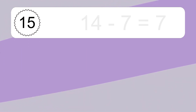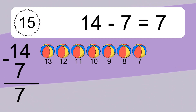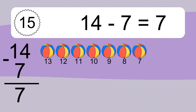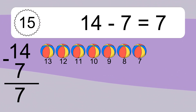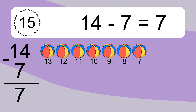14 minus 7 equals what? 14 minus 7 equals 7. Let's count it: 13, 12, 11, 10, 9, 8, 7.